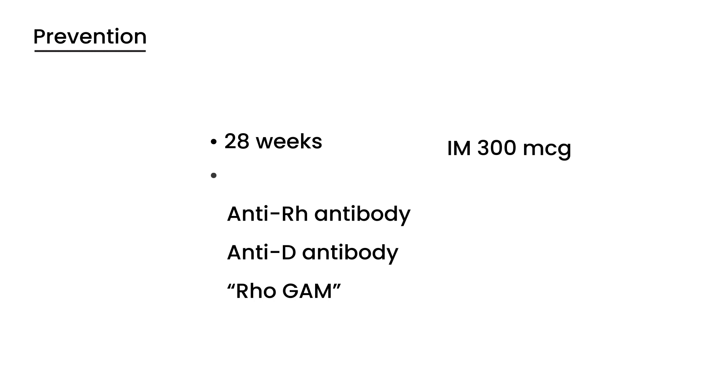Prevention is by giving the mother at 28 weeks something called anti-Rh antibody as an injection. What that does is neutralize the Rh positive fetal red blood cells. It's also called anti-D antibody because Rh is an antigen, in particular the D antigen. There's a brand name which is very popular called RhoGAM, especially in the United States. At 28 weeks you give this—it's an IM shot, usually 300 mcg IM—and you also give it 72 hours after delivery and after pregnancy termination.